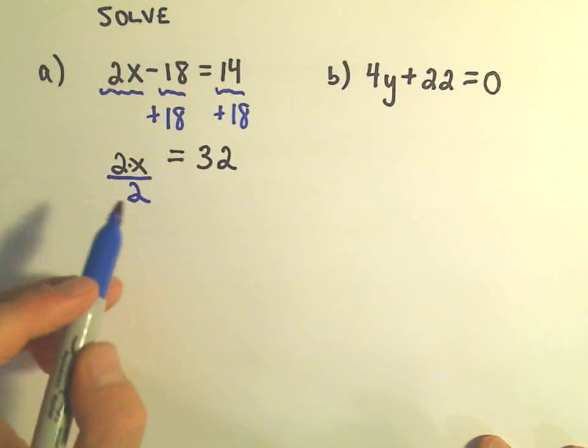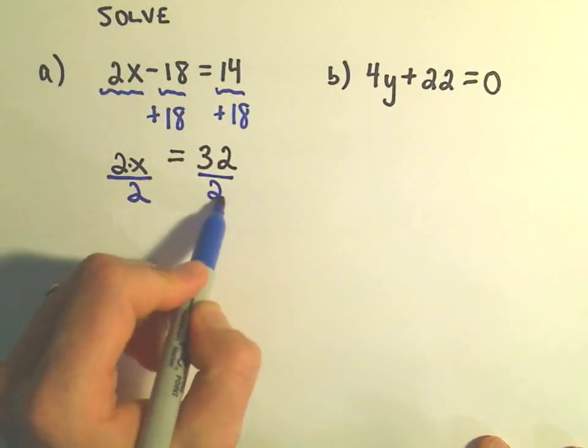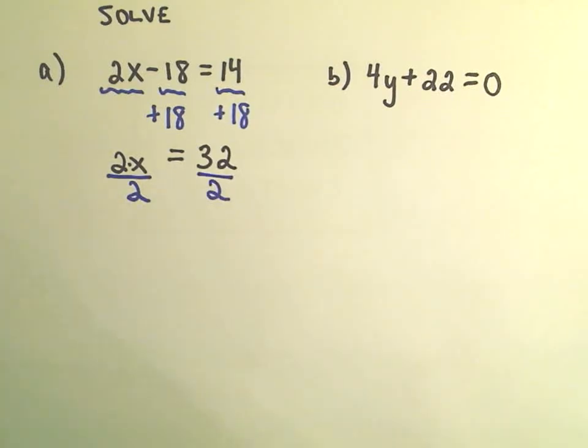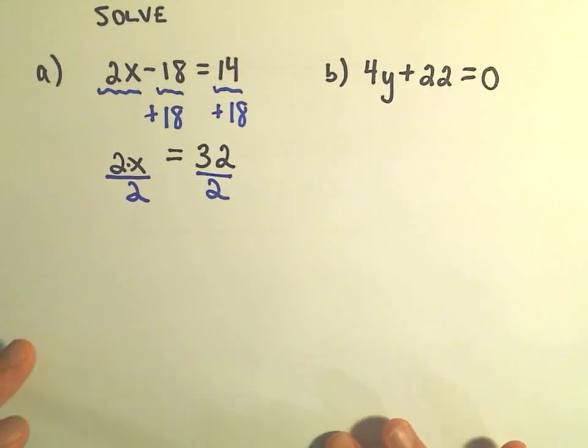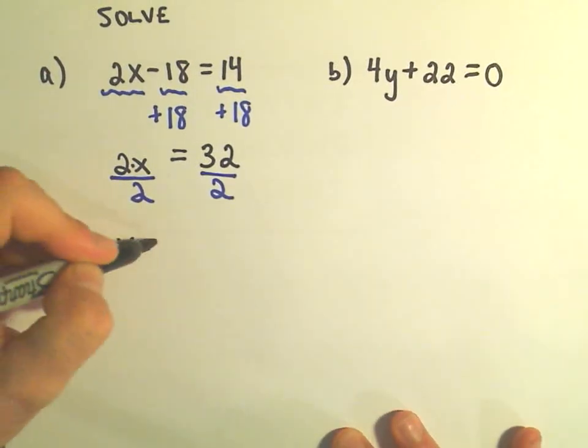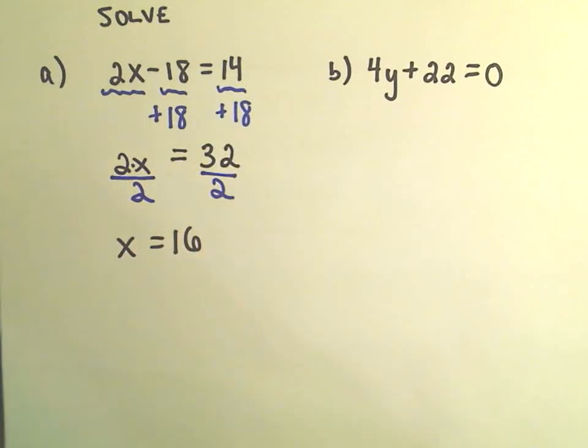So since I'm multiplying by 2, if I divide both sides by 2, on the left side, 2 divided by 2 is just 1x. And then 32 divided by 2 is 16. And hey, now I've got my solution.